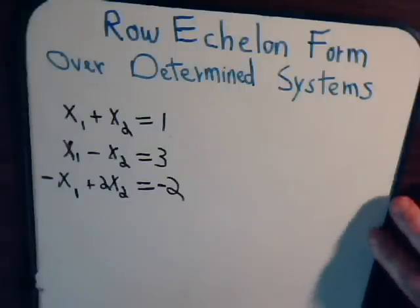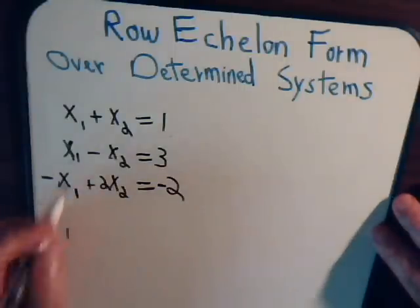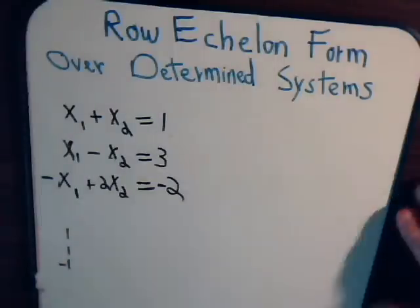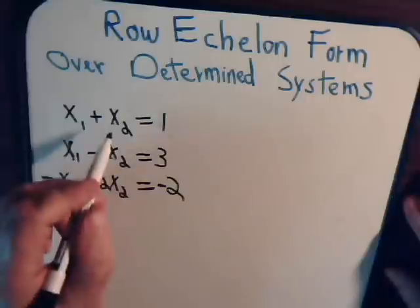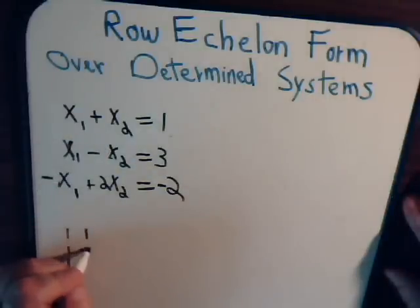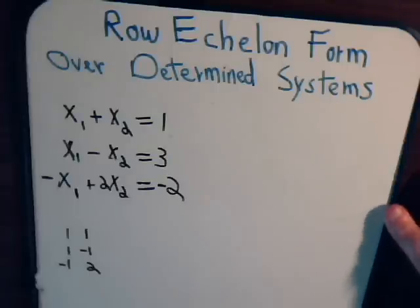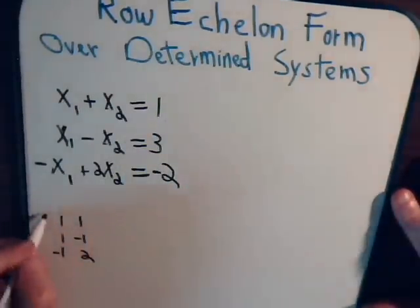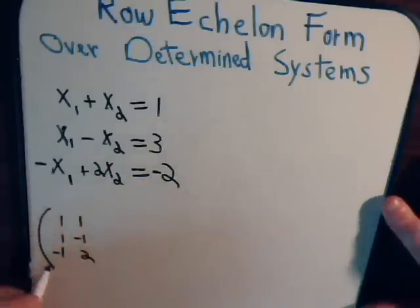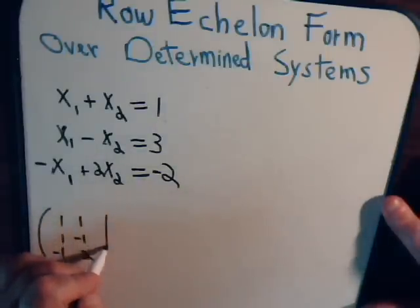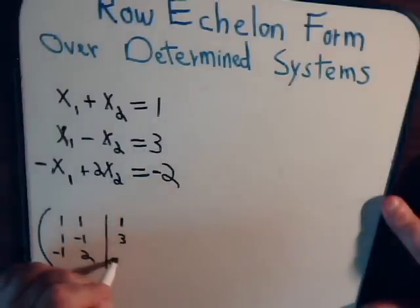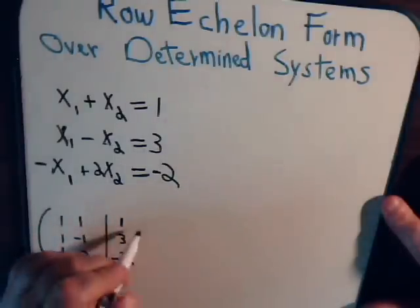So the first column is going to be 1, 1, negative 1, then here we have 1, negative 1, 2, and then we also include these numbers and what we do is form a vertical line and we have 1, 3, negative 2.